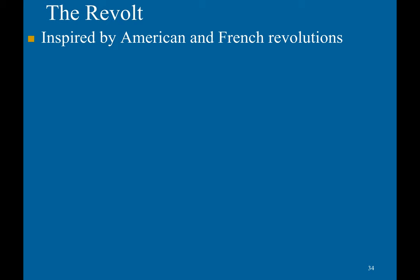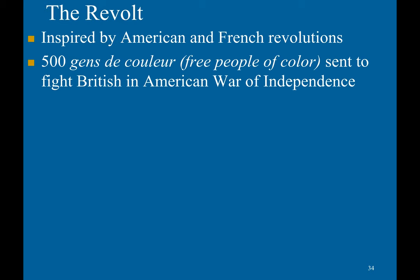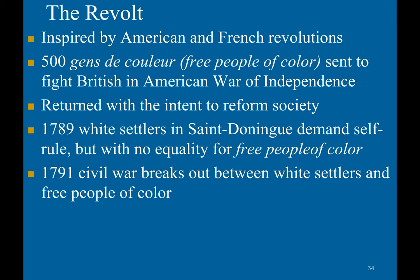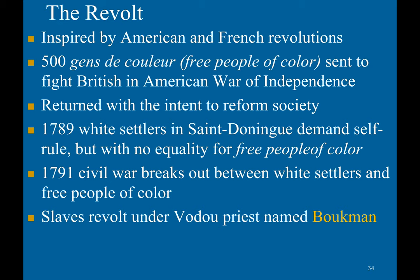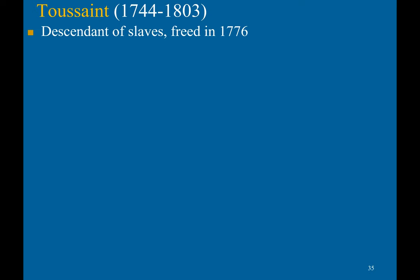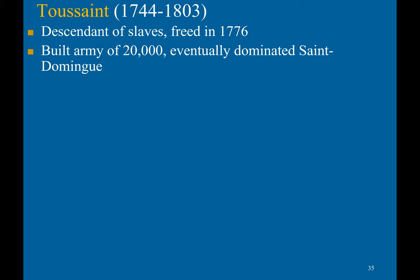The revolt was inspired by the American and French revolutions. 500 gens de couleur were sent to fight the British in the American War of Independence and returned with the intent to reform society. In 1789, white settlers in Saint-Domingue demanded self-rule but with no equality for free people of color. This unsurprisingly led to chaos, as in 1791 a civil war broke out between white settlers and free people of color. A slave revolt under a voodoo priest named Boukman arose, while French, British, and Spanish forces attempted to intervene. A man named Toussaint would eventually play a key role — he was a descendant of slaves, freed in 1776. He built an army of 20,000, eventually dominating Saint-Domingue, renaming his forces the Opening in 1791.